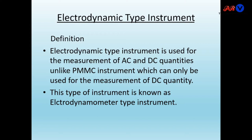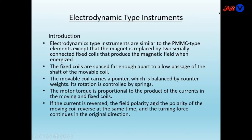Electrodynamic type instruments are used for the measurement of AC and DC quantities, unlike PMMC instruments which can only be used for measurement of DC quantities. This type of instrument is known as electrodynamometer type instruments.